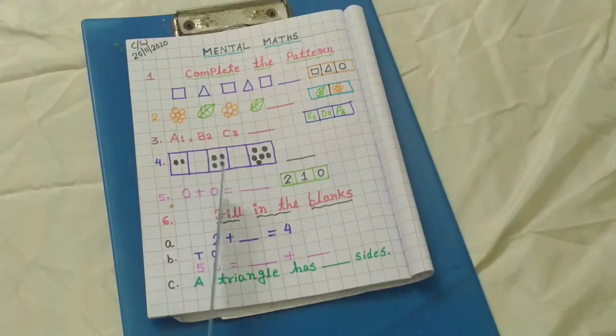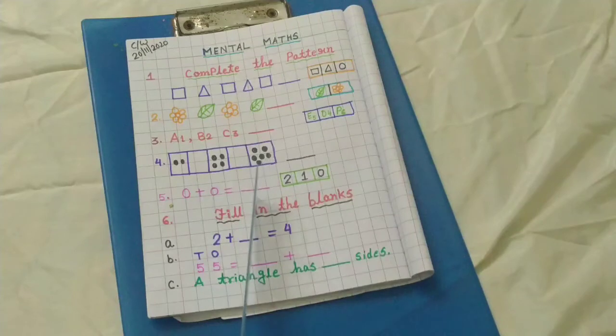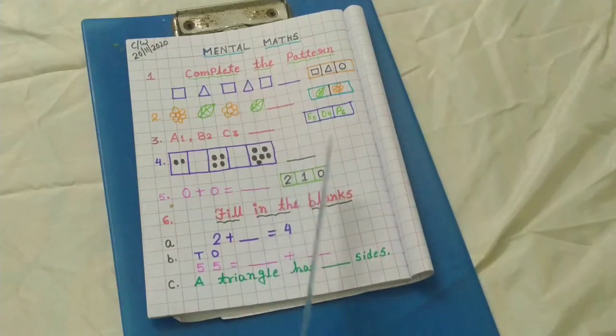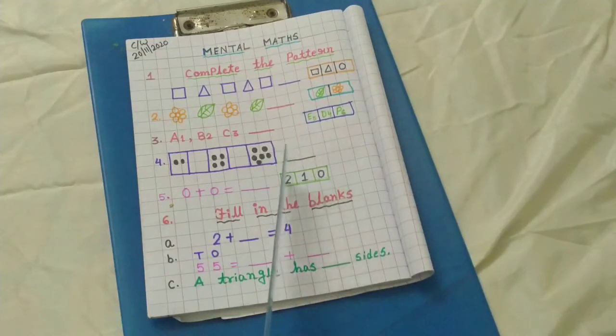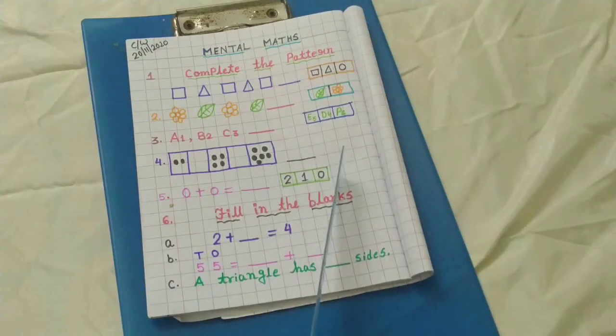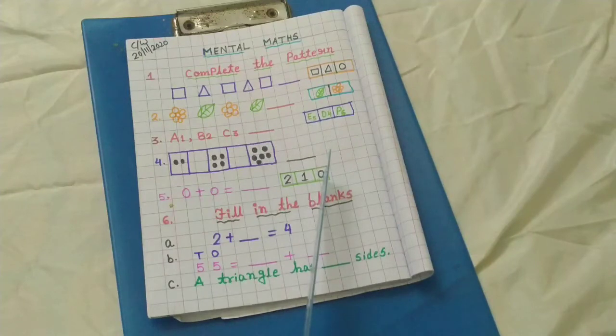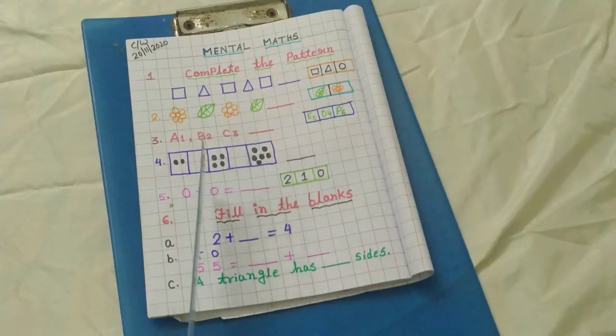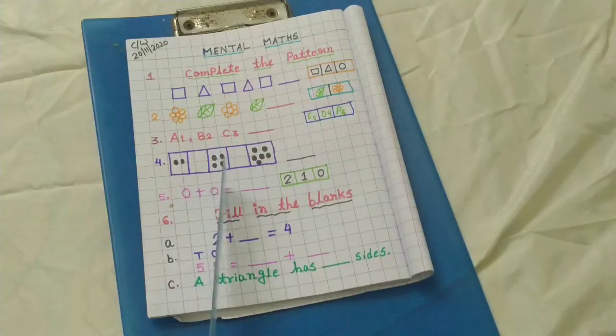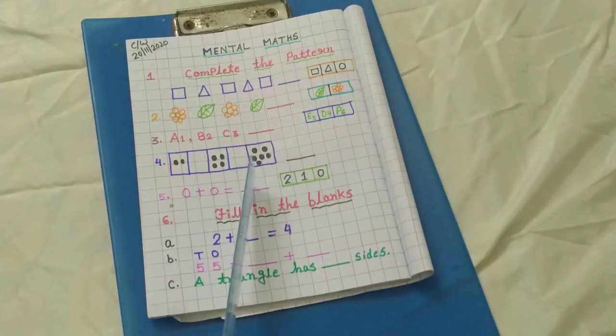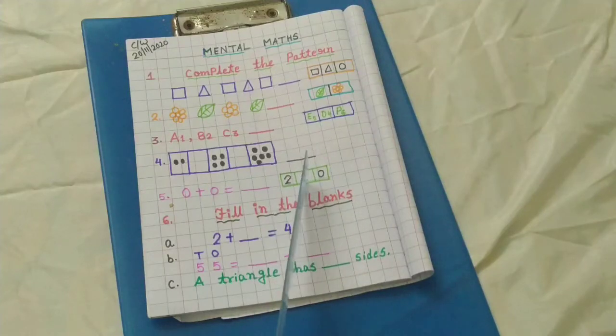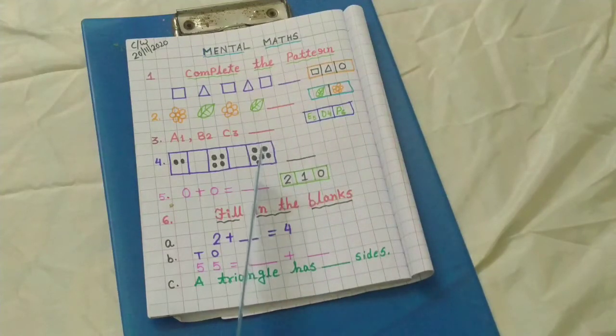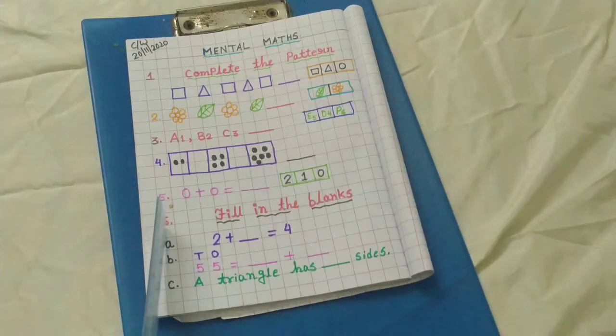Number 5. 0 plus 0 is equal to 2 or 1 or 0. Three options are there. So you choose your answer and please write here. 0 plus 0 is equal to 2 or 1 or 0.